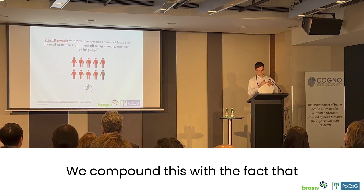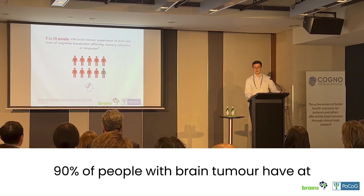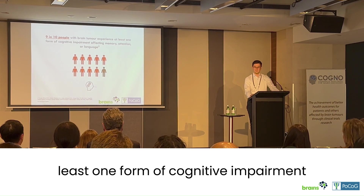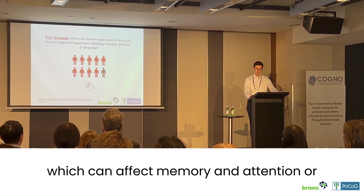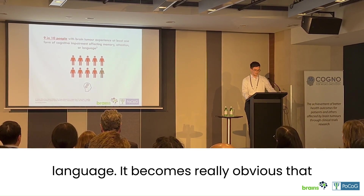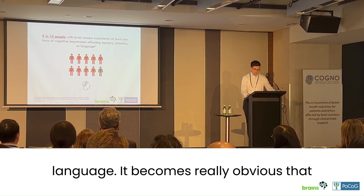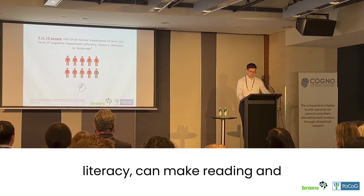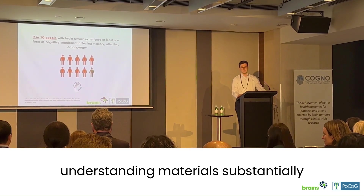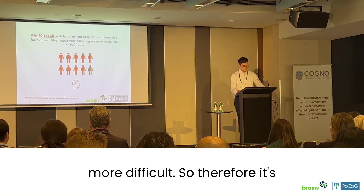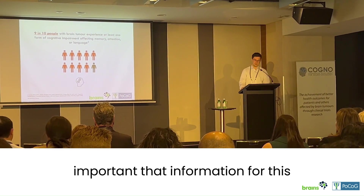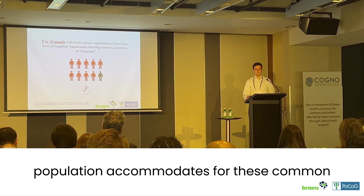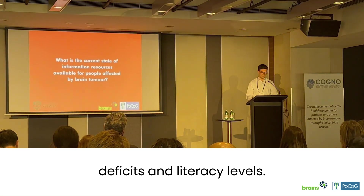We compound this with the fact that 90% of people with brain tumor have at least one form of cognitive impairment, which can affect memory, attention, or language. It becomes really obvious that these issues combined with generally low literacy can make reading and understanding materials substantially more difficult. Therefore, it's important that information for this population accommodates for these common deficits and literacy levels.